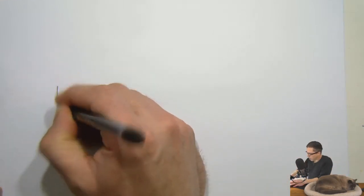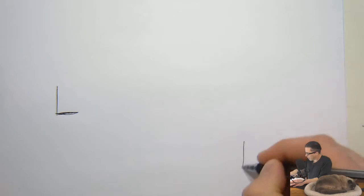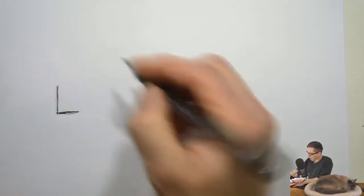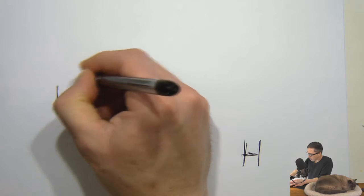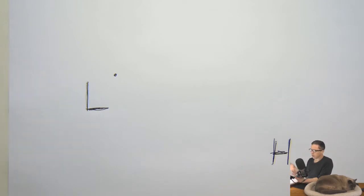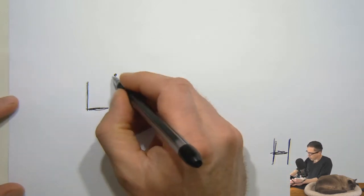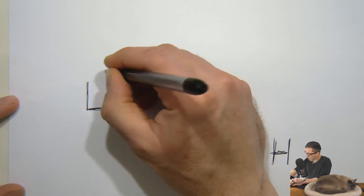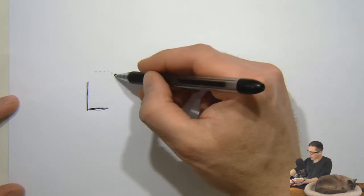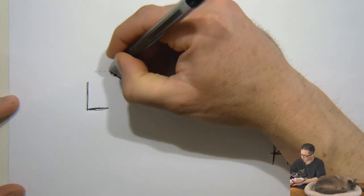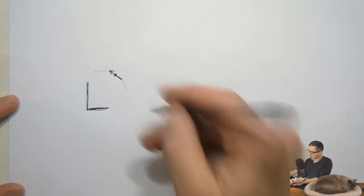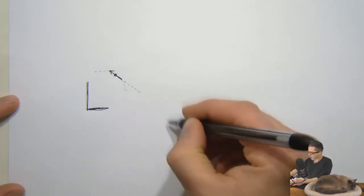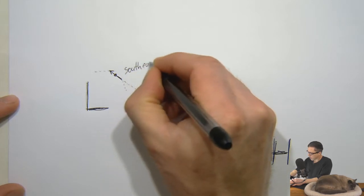Let's do another example. Say I've got a low and I've got a high, and I've got a city right here. If this is the northern hemisphere, counterclockwise — think of a circle going around the low going counterclockwise, coming through right here. What's the tangent of that circle at that point? Like this. And which direction is it coming from? It's coming from the southeast — so this is a southeast wind.